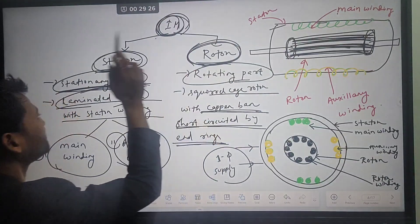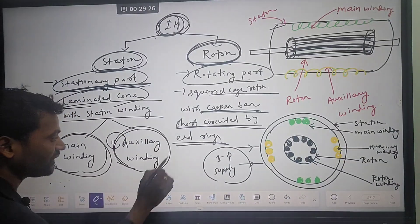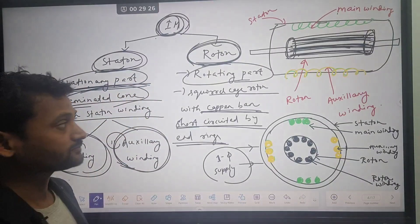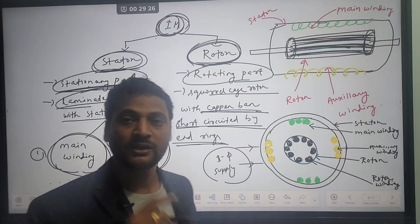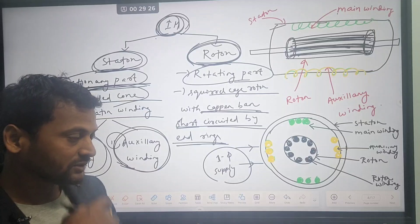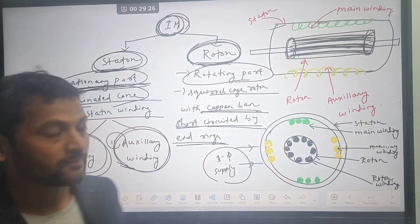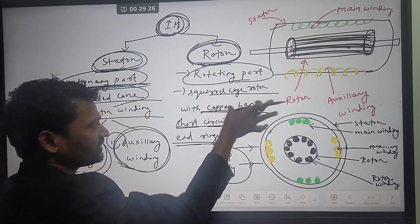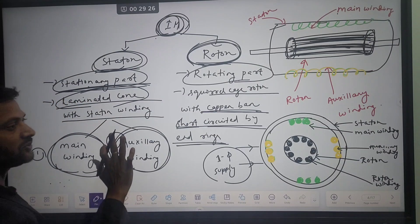Overall, the induction motor has two parts: stator and rotor. The stator is the stationary part, the rotor is the rotating part. The stator is a laminated core with two windings — main winding and auxiliary winding — which are thin copper wires wound over a magnetic pole. Current-carrying conductors produce magnetic field, as in a solenoid. The rotor is the rotating part with squirrel cage rotor conductors that are short-circuited.